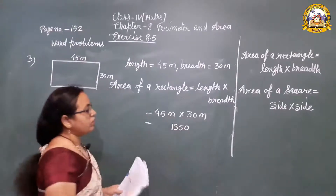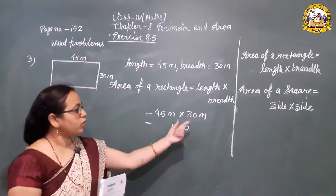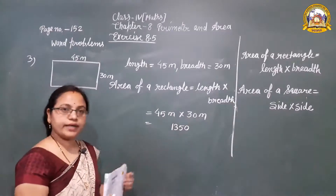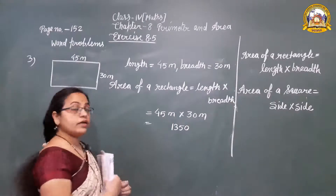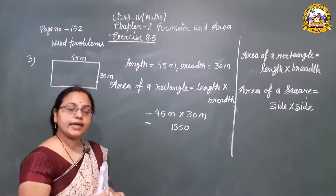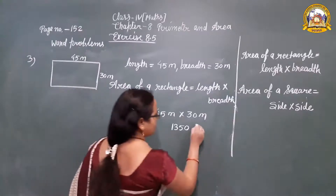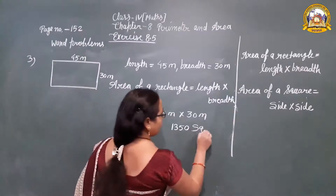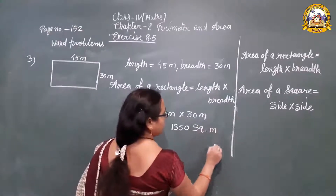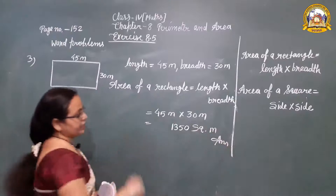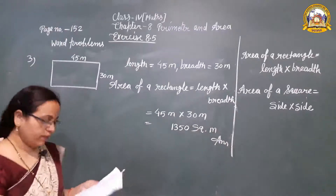When we multiply both numbers we get 1,350 square meters. That is the answer — it is the area of the swimming pool.